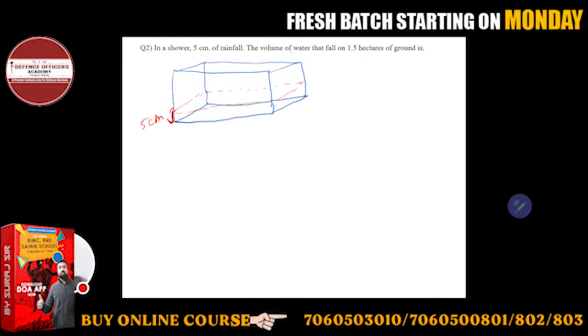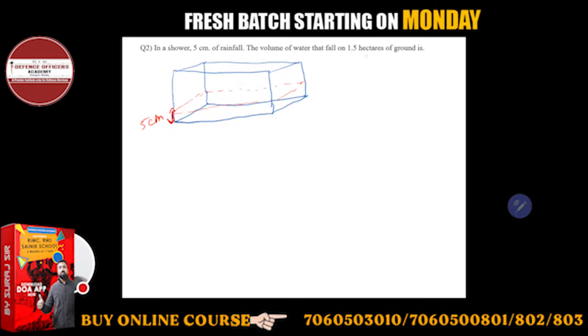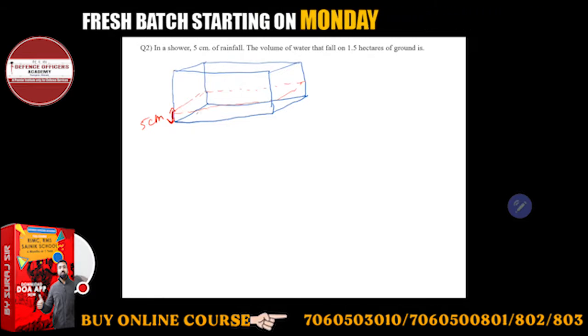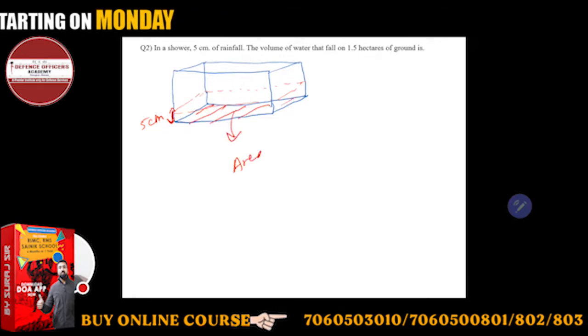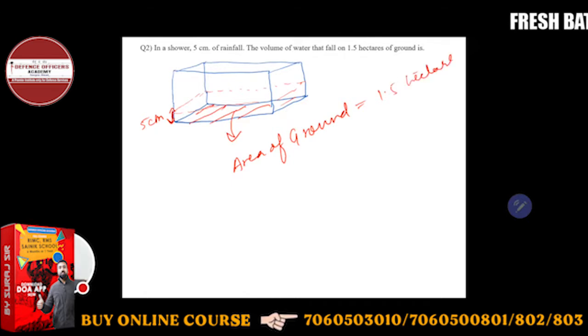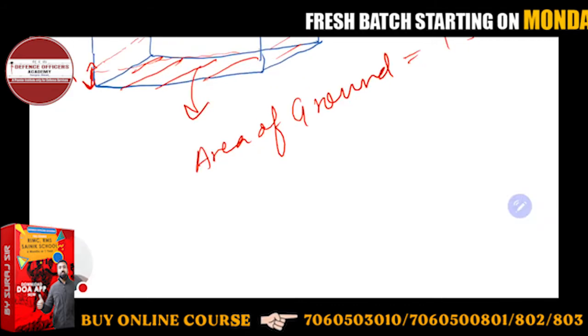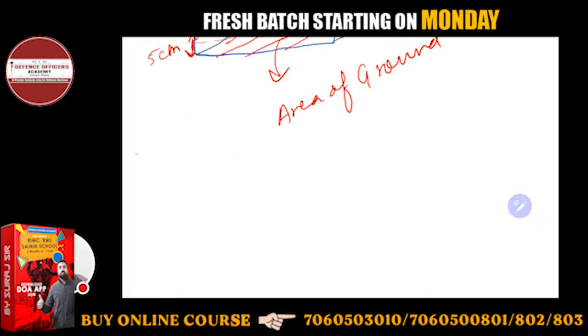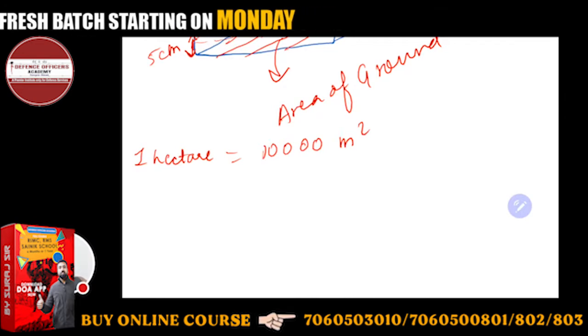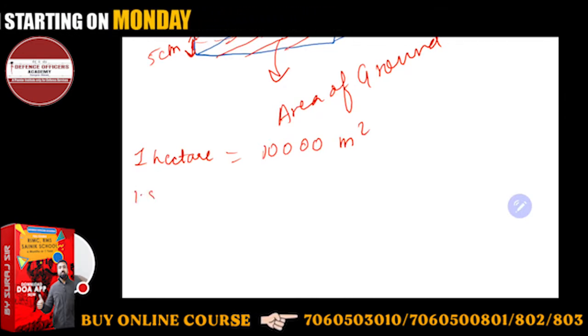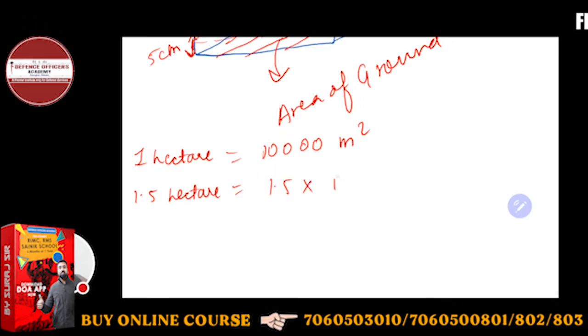Now the volume of the water falls on 1.5 hectare of ground. So the area of ground is 1.5 hectare. You know that 1 hectare is nothing but 10,000 m². So 1.5 hectare is going to be 1.5 into 10,000 m².